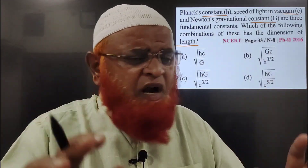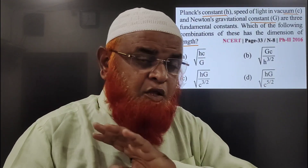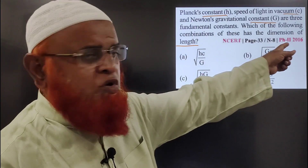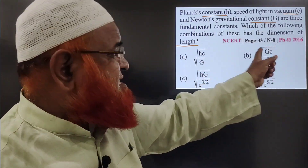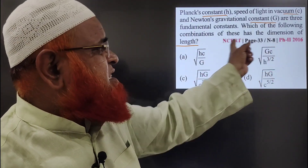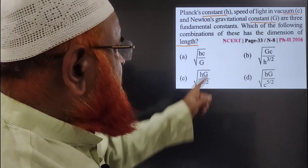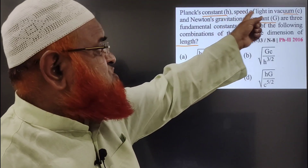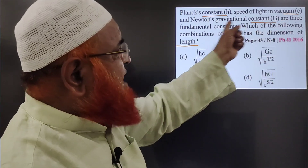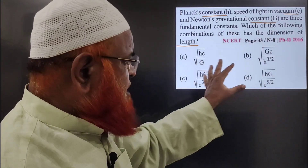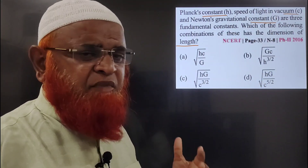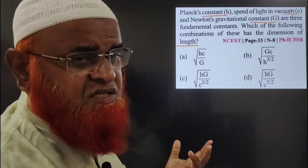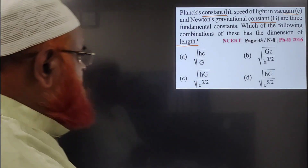Now let us solve this in a different style — you will not get this method on the total internet, that is my challenge. This is a previous year question asked in NEET 2016, page number 33 in the NCERT book. It asks us to find the dimensions of length in terms of Planck's constant H, velocity of light C, and gravitational constant G. The general method is given in books, but let us solve it differently.